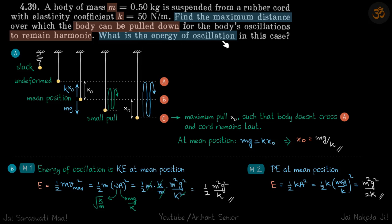Now the energy of the oscillation can be found by two ways: kinetic energy at the mean position and potential energy at extreme position. Kinetic energy at mean position is half m v max square, and v max is omega a, omega is root k by m, and amplitude is mg by k. We put these values and we get our answer. Second is potential energy at extreme position which is half k a square, so a is again mg by k and we get our answer.